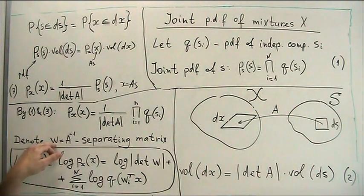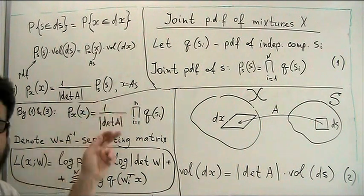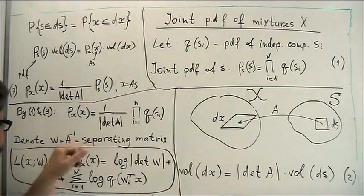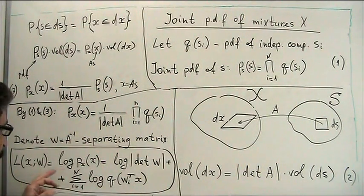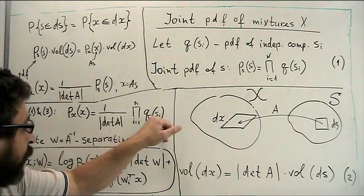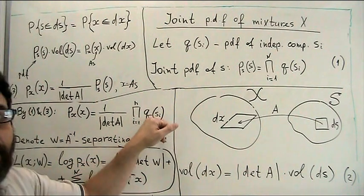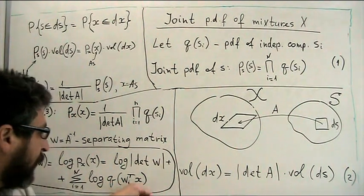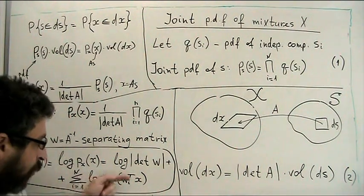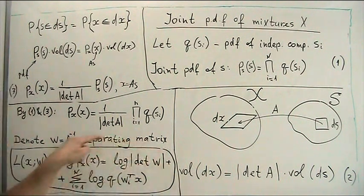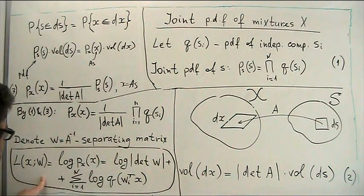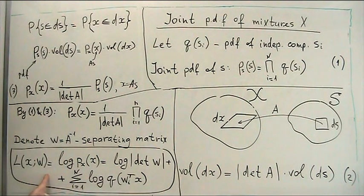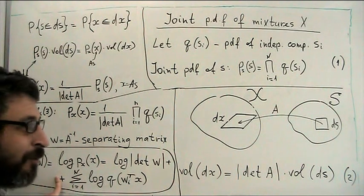And, of course, that W is 1 over determinant of A because of this inverse. And then, instead of S, I can write Wx. I mean, every component of S is corresponding to row of W multiplied by S. And this gives me my final formula for log-likelihood of my observations.